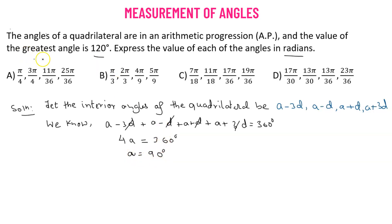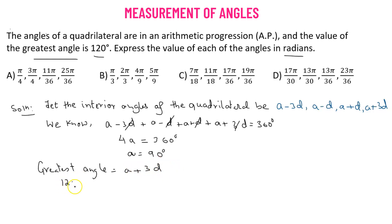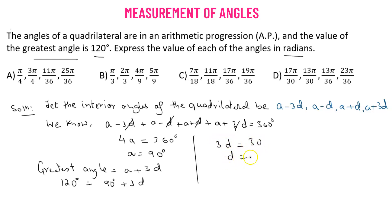It is given that the greatest angle is 120 degrees. The greatest angle here is a plus 3d. So we have 90 plus 3d equals 120 degrees. Solving, 3d equals 120 minus 90 equals 30 degrees, so d comes out to be 10 degrees. Now we have both a and d and can find all the angles.